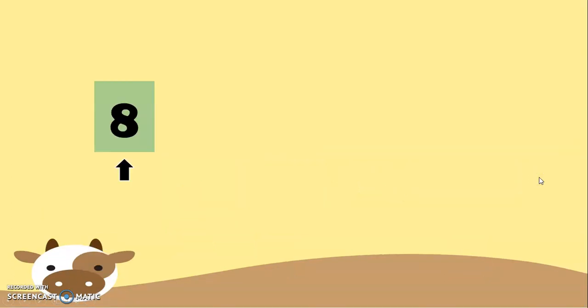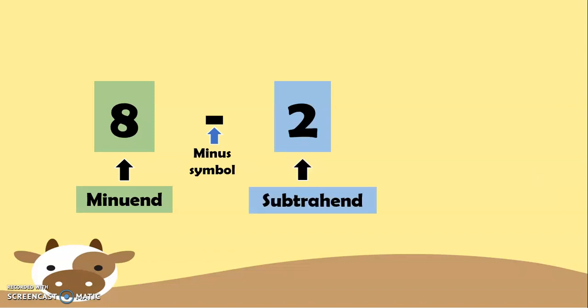Now, 8 is what we call the minuend. And the minuend is the number from which a number is being taken away. And 8 minus 2 and 2 is the subtrahend. And the subtrahend is the number that is being taken away. So, 8 minus 2 equals 6, which is what we call the difference or the result of subtracting 2 from 8.